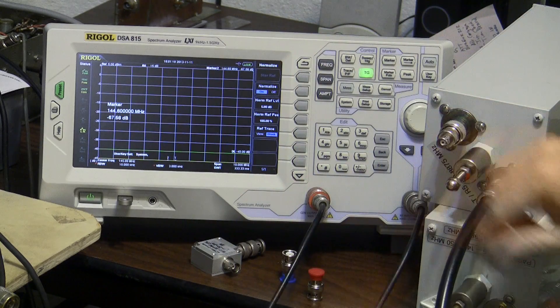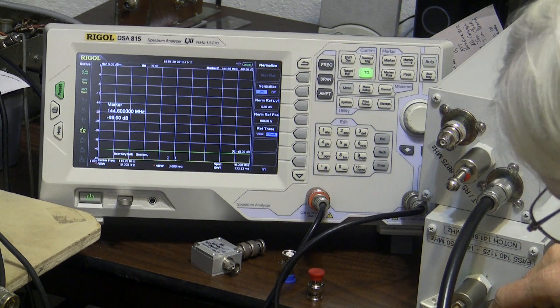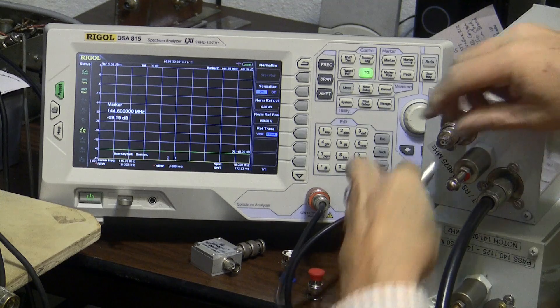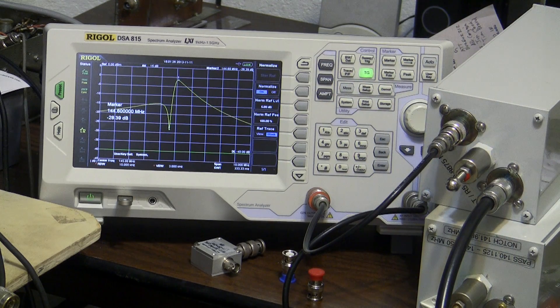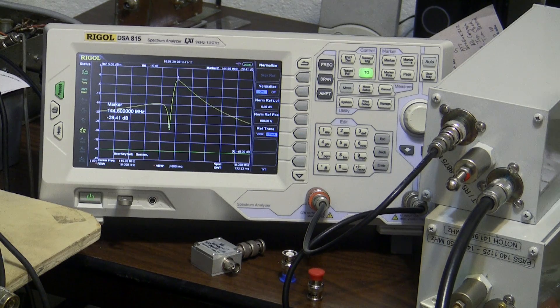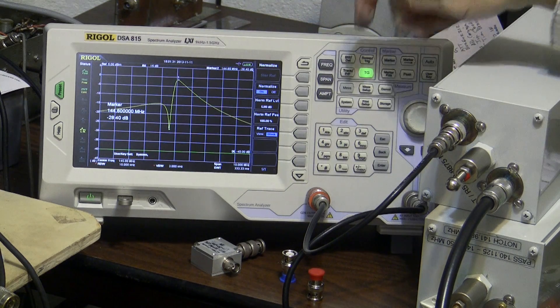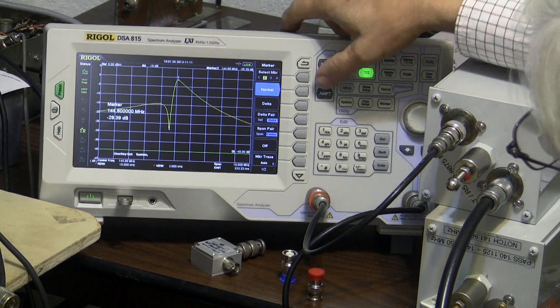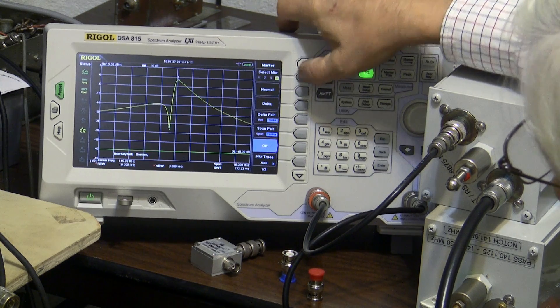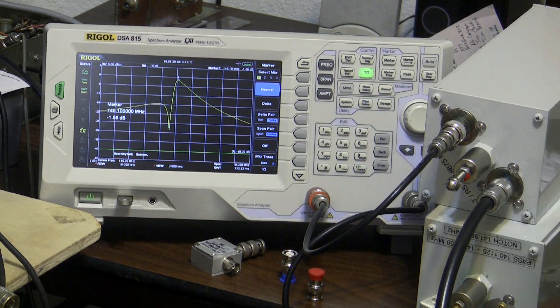Put this on the output, put this on the input, and there's our pass curve again. Minus 28 again. Marker 1 minus 1.56.